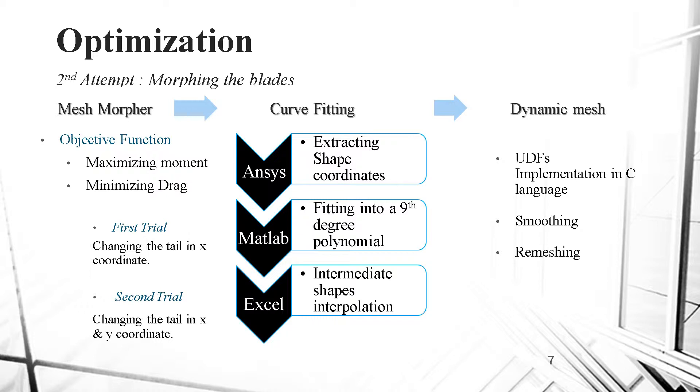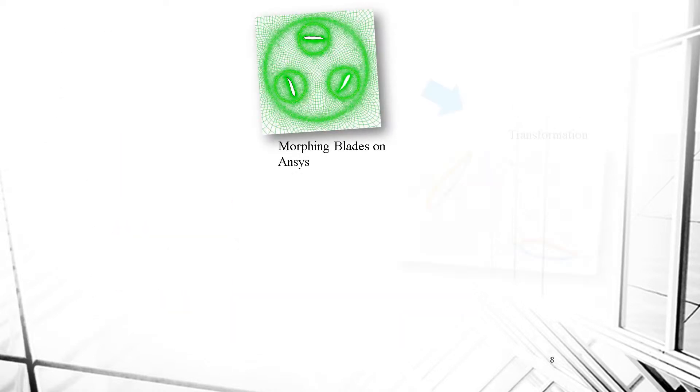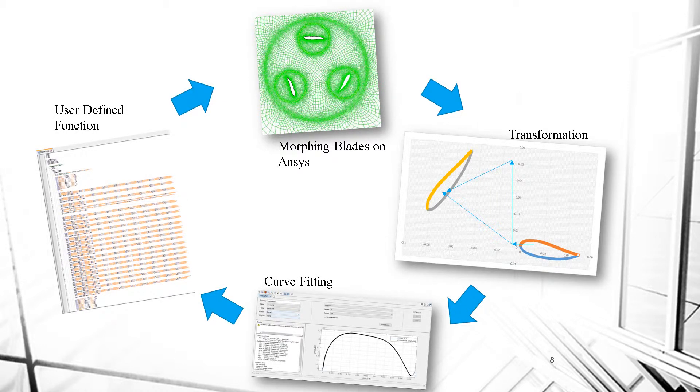Second, the curve fitting. We start by extracting the shape's coordinates, then we fit the coordinates into a polynomial, and finally we interpolate between the shapes to get a smooth path while rotating. Third, we move to dynamic mesh. The team then creates user-defined functions, that are basically C codes that will be implemented in the simulation to perform the morphing action. To summarize, the methodology starts with morphing the blades on ANSYS. Then we take those shapes and we perform transformation and curve fitting on Excel and MATLAB. And finally, we write user-defined functions that will be re-implemented on ANSYS.